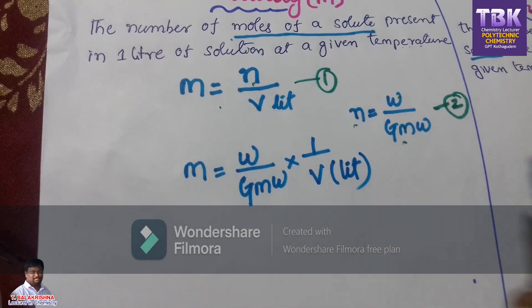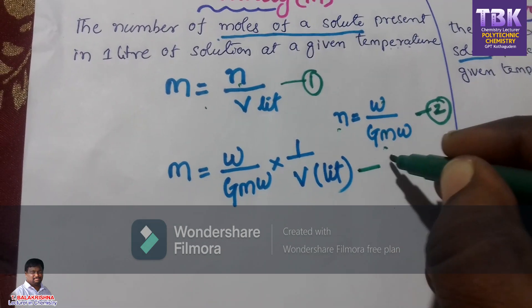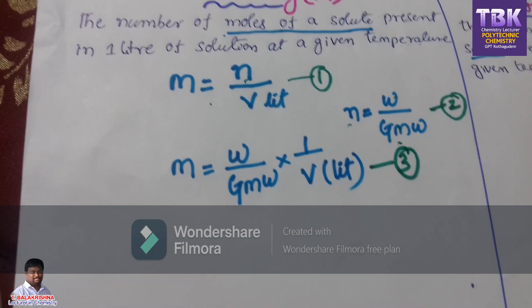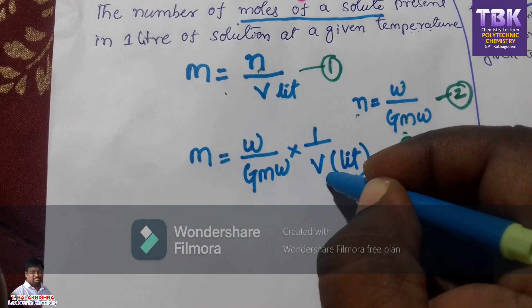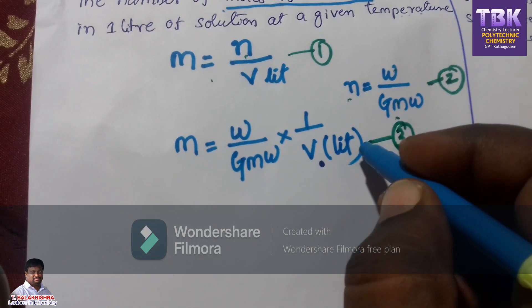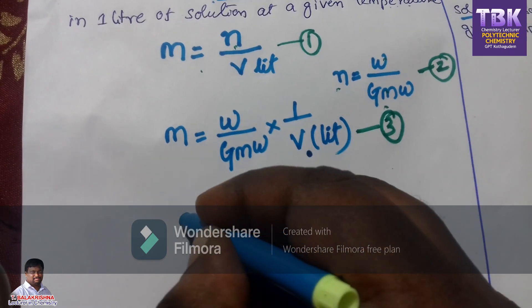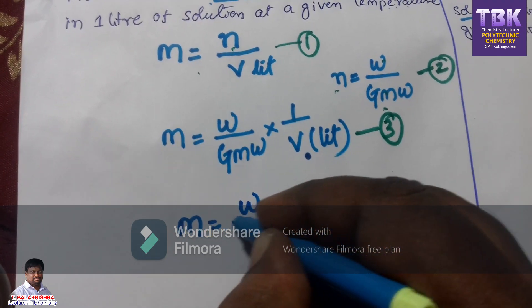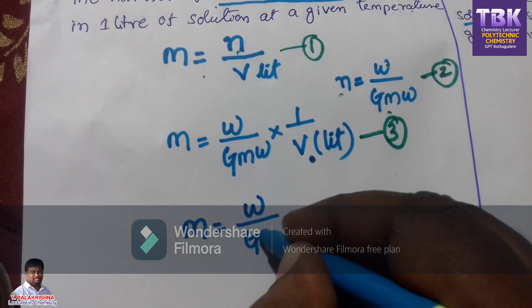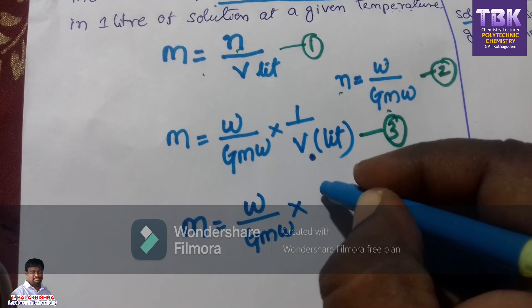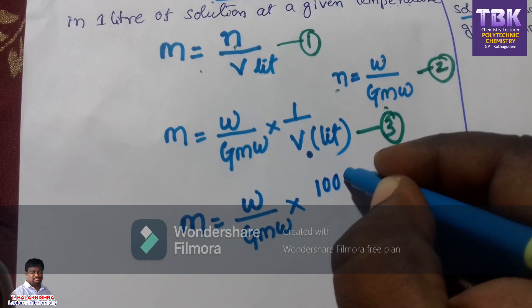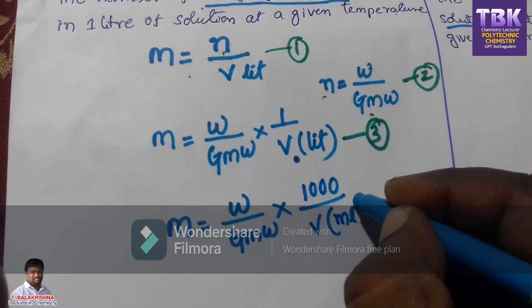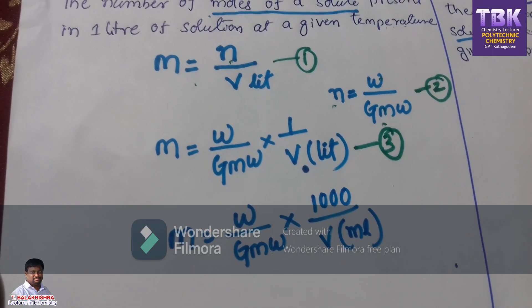This is the third equation. In some cases, volume is given in milliliters. Liters are converted to milliliters — one liter equals 1000 mL. So the formula is converted to: M is equal to W by gmw, multiplied by 1000 by V in milliliters. This is the fourth equation.